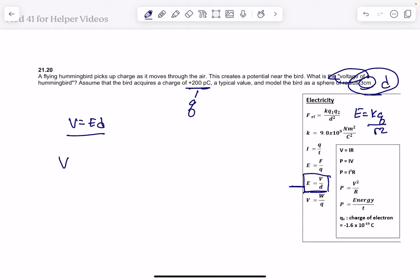So if I say V equals, and I substitute this E in for this, KQ over R, or we could actually say D squared, we times it by D. Then of course this D cancels and one of these, so voltage would be KQ over D.